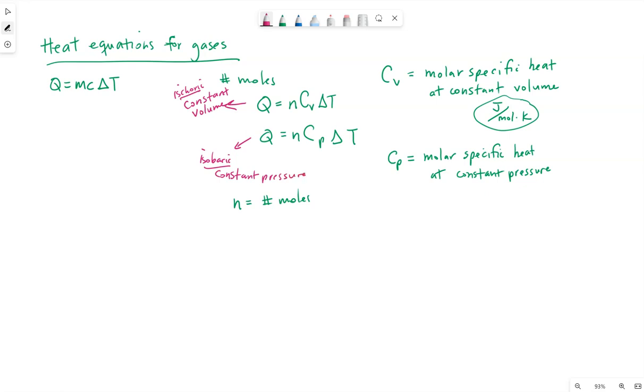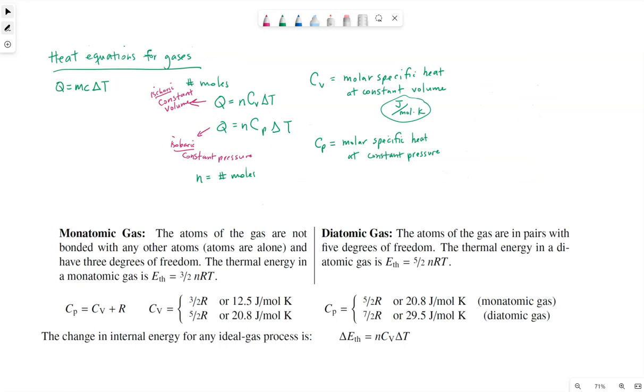Now C V and C P are constant depending upon the type of gases that we are working with. So sudden jump in picture. After I went and copied out of the test notes, this is about a third to half of the way down on the page, chapter 19 in the test notes. Our constants C P and C V, so C P molar specific heat at constant pressure, C V molar specific heat at constant volume.